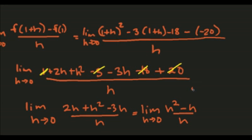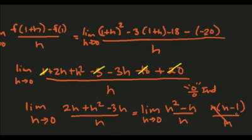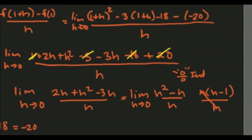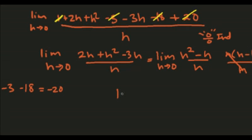At this point if you plug in you'd get 0 over 0. If you remember that's indeterminate. So we factor out the h that's common or you could split this apart. I'm just going to factor it out that way you can cancel. And then if h approaches 0, we're running out of space there, you get a negative 1.